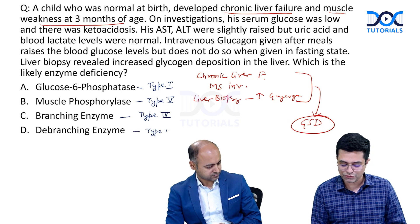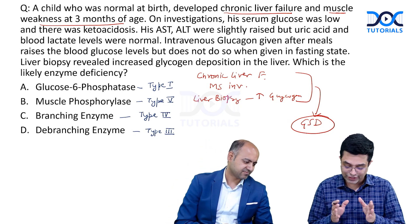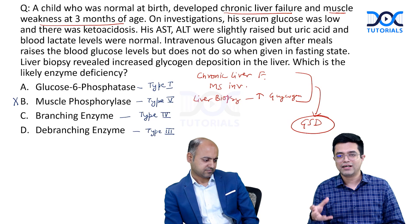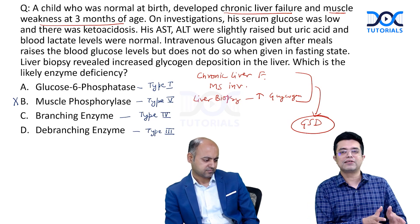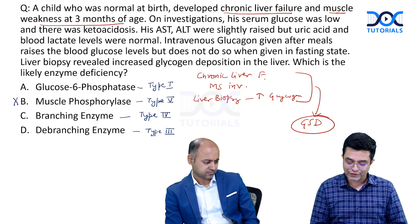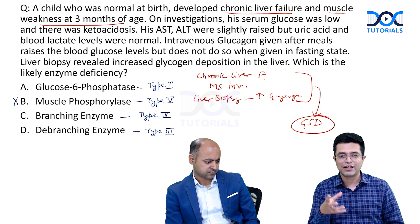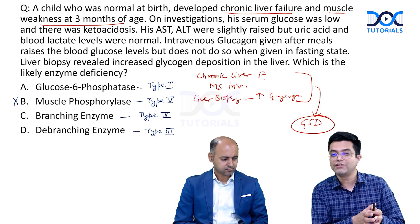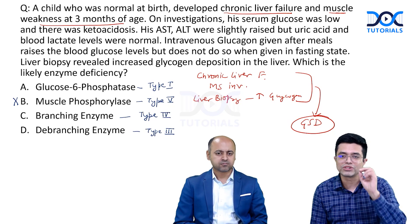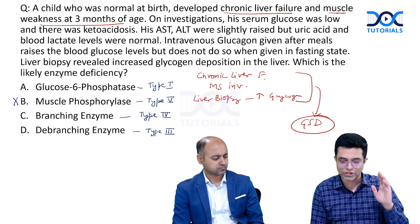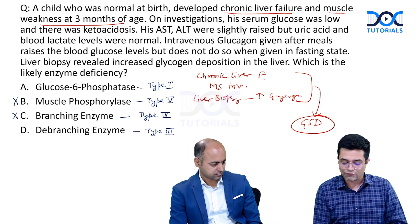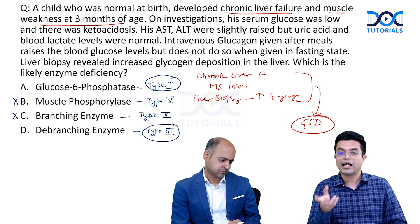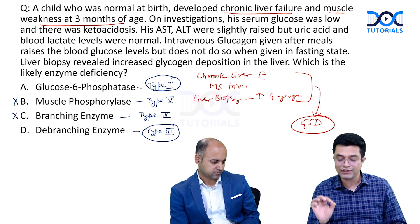Muscle phosphorylase (Type 5) can be ruled out — it is mainly related to muscle problems, not liver. Type 4 (branching enzyme deficiency) presents with milder hypoglycemia, failure to thrive, severe hepatosplenomegaly, and death from micronodular cirrhosis — none of which are mentioned here. What we are left with is Type 1 and Type 3, both of which can show liver and muscle involvement and hypoglycemia.